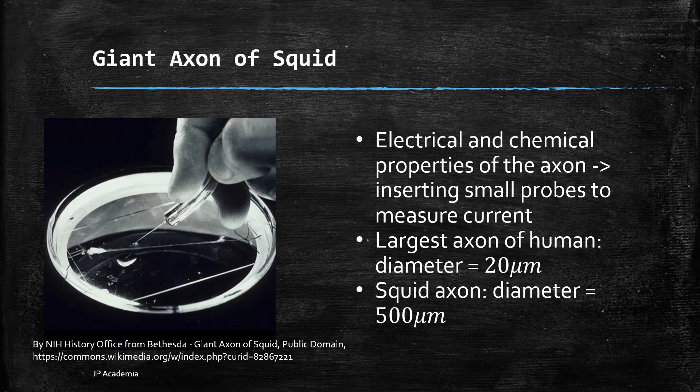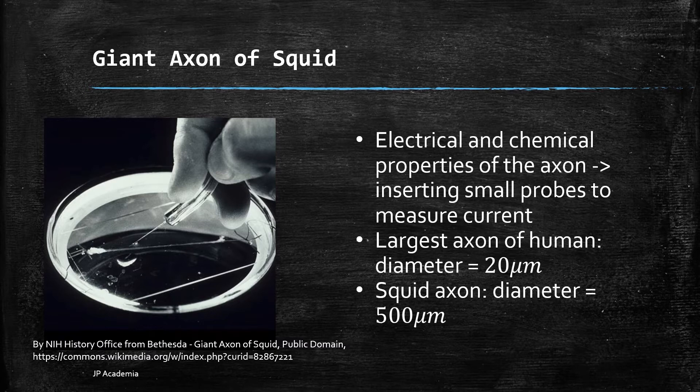Experimentally, the electrical and chemical properties of the axon can be measured by placing small needle-like probes into the axon sample. This is challenging in reality because the diameter of most axons is very small. The largest axon of human has a diameter of about 20 micrometers. However, the squid has a giant axon with a diameter of about 500 micrometers or about 0.5 millimeters. Thus, it is easier to use giant axon of squid to study neurons in the laboratory.